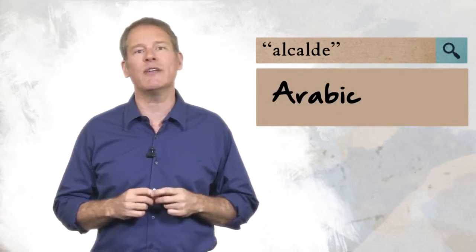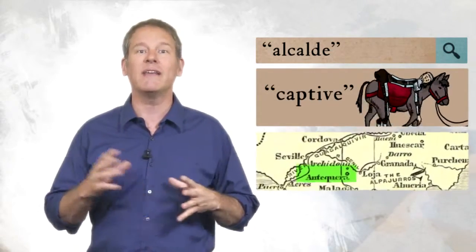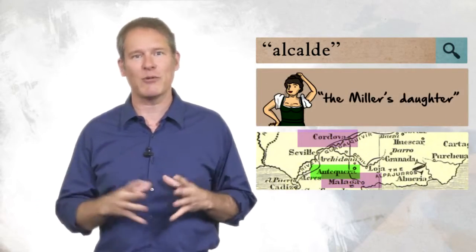The term alcalde, governor in English, is Arabic. Even Antequera, the place where Don Quixote is brought captive, in his mind, is located in Andalusia, between Córdoba and Málaga, recalling the Miller's Daughter in Chapter 3.